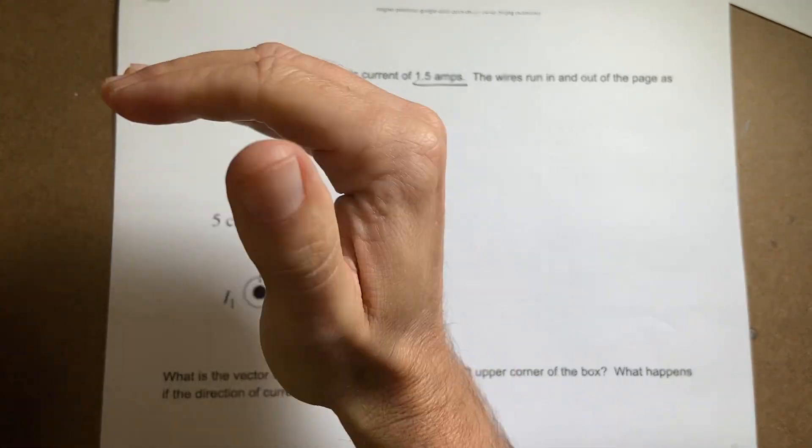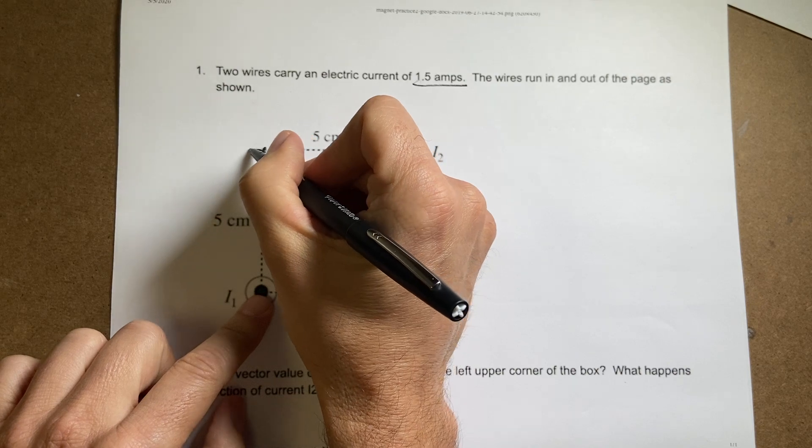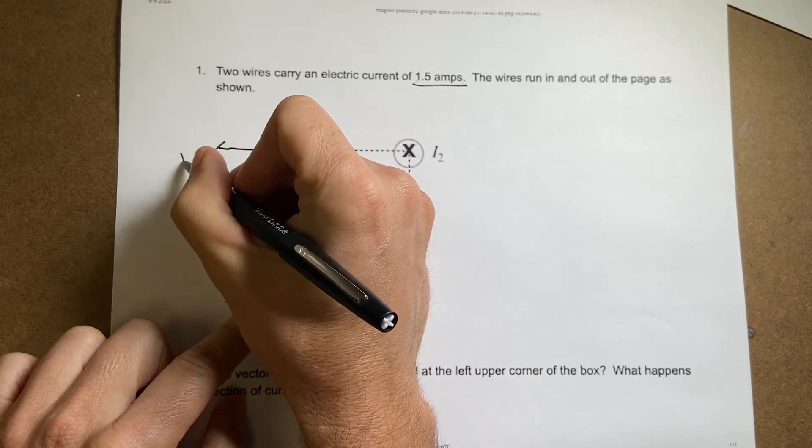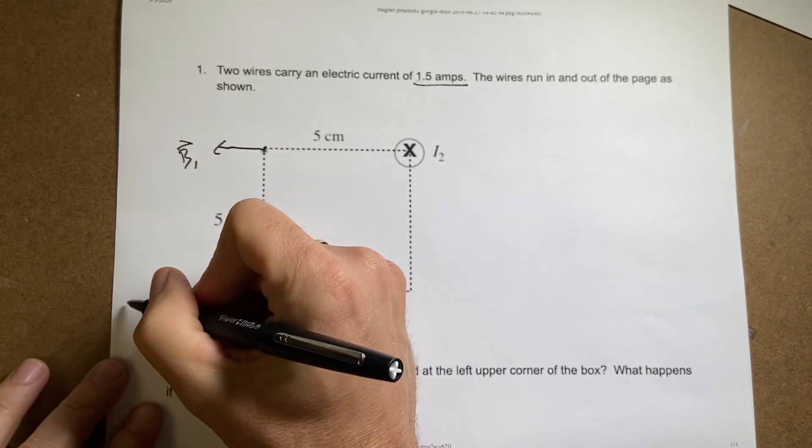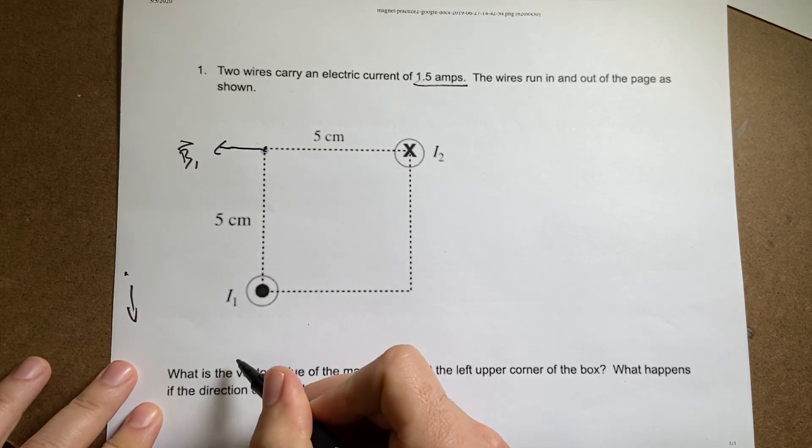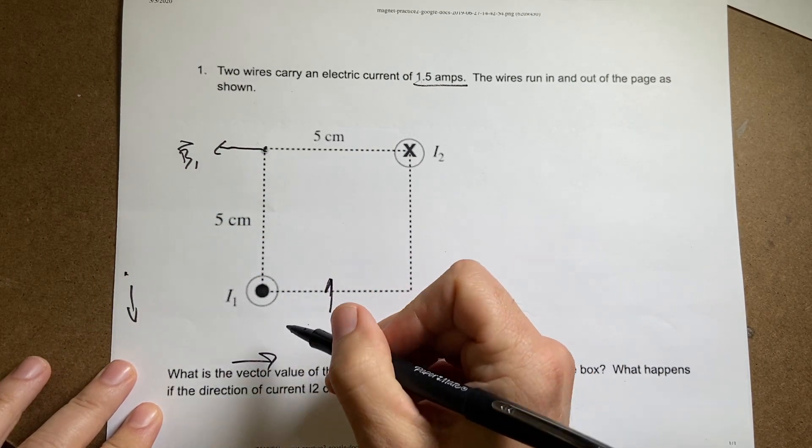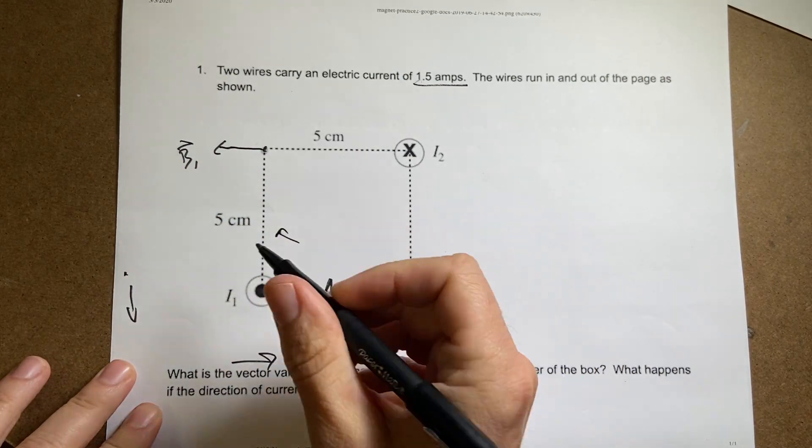So that means up here, I would have this as the direction for B1. And over here, it'd be down. Over here, it'd be this way. Over here, it'd be that way. So you can see the direction that would make.